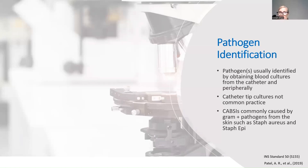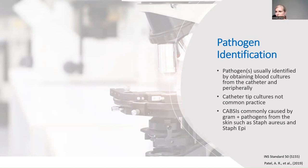For pathogen identification, blood cultures should be drawn both from the catheter and peripherally if possible. Catheter tip culture is not common practice. The pathogens most often found are skin pathogens — Staph epi and Staph aureus. One important point: if a patient has multiple infections always growing the same pathogen, it's probably not poor technique. Poor technique would produce polymicrobial infections or different organisms each time.